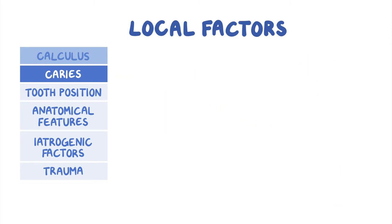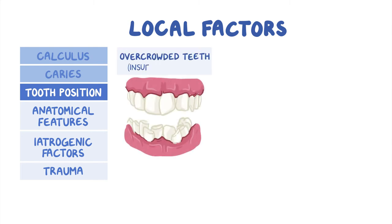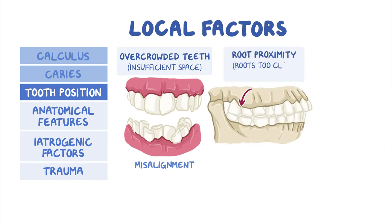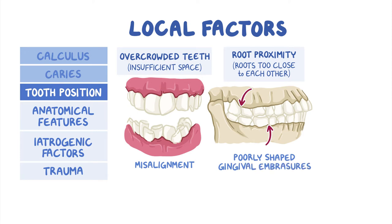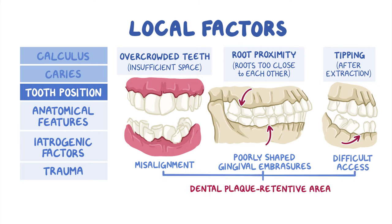The next local factor is tooth position. Overcrowded teeth, or dental crowding, occurs when there is an insufficient amount of space for all teeth to properly erupt, resulting in misalignment. Root proximity occurs when tooth roots are too close to each other, leading to poorly shaped gingival embrasures. Tipping occurs when a tooth is extracted and the tooth distal to it tips into the space, creating a difficult area to access. All three factors can cause dental plaque retentive areas and increased risk of periodontitis.